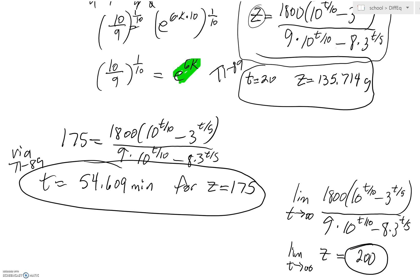Could we have done this just by hand? Think about end behavior, guys. Look, the 3 to the T over 5, that's small compared to the 10 to the T over 10. Ultimately, you'd get 1,800 divided by 9. So, use your 89. That, hopefully, will help you out quite a bit.